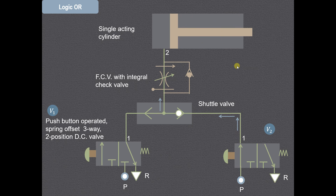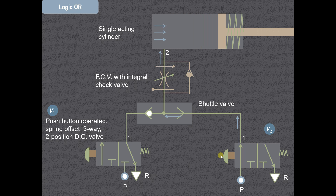Now when the push button of any of the direction control valves is pushed, the operation of the single acting cylinder will take place. Either valve V1 or valve V2 is to be operated. Suppose we operate valve V2 and press its push button so that it will be in the left envelope mode. Then from the pressure port P, the high pressure compressed air will enter into port 1.